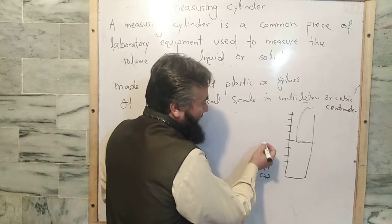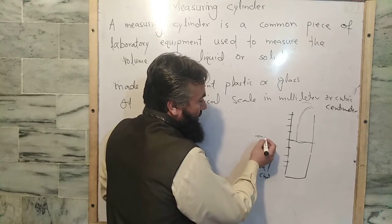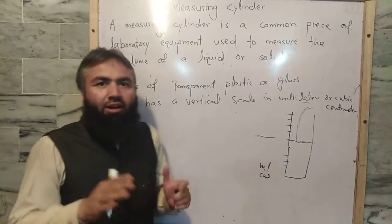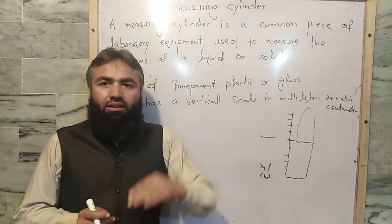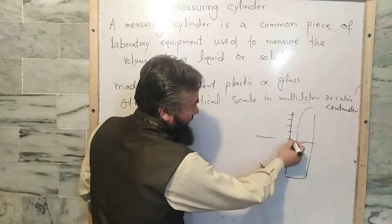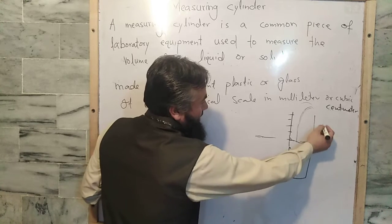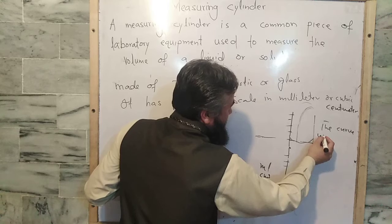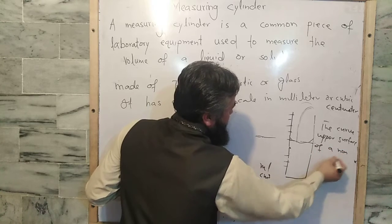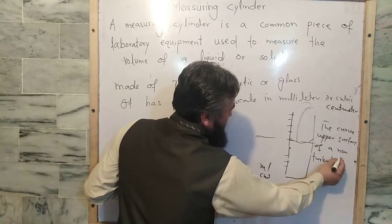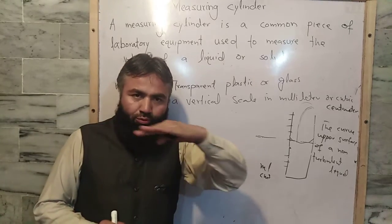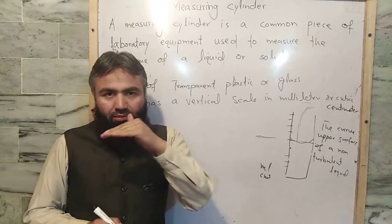For accurate observation, it should be at eye level — we should see it from here — and at the bottom of the meniscus. What is meniscus? The curved upper surface of a non-turbulent liquid is called the meniscus. So for accurate observation, we should read it at the bottom of the meniscus.